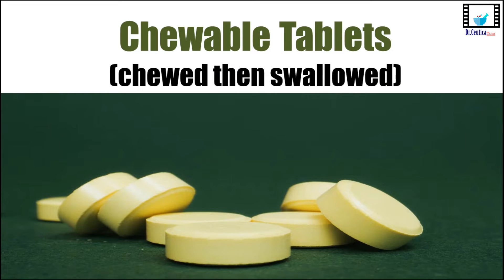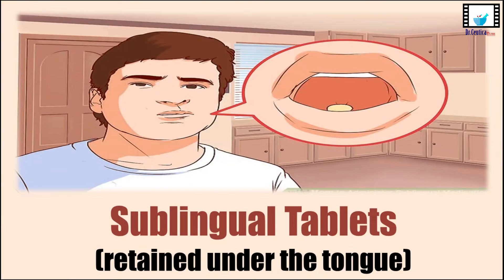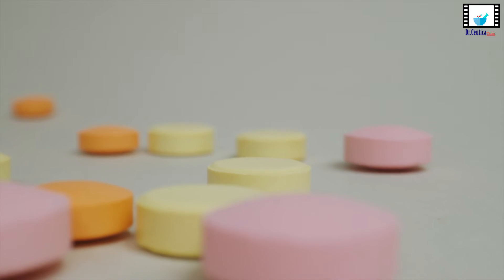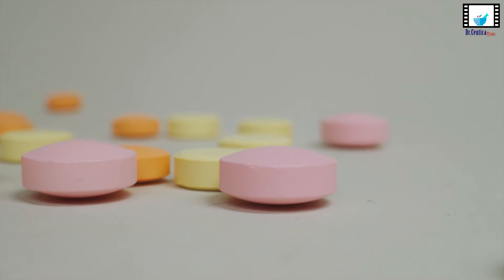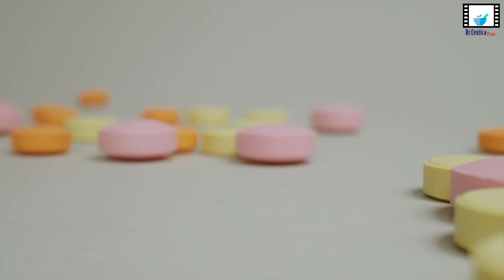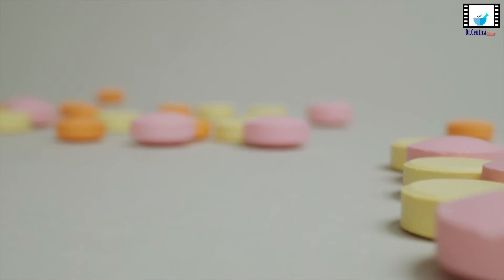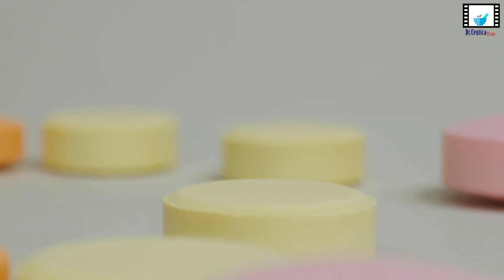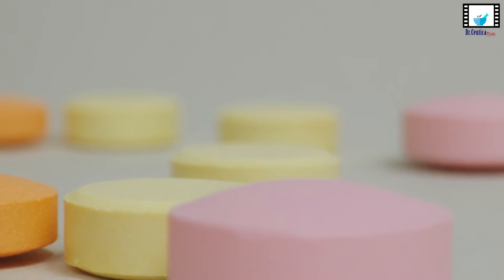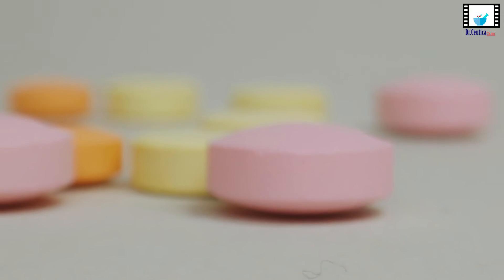We might also come across chewable tablets, which are, as the name implies, chewed before being swallowed. There are also sublingual tablets — those are held under the tongue, and a famous example of those are the nitroglycerin tablets. Write in the comments what type of tablet crossed your mind while I was listing the different examples, and we will provide a list of the different tablet types later in this series.